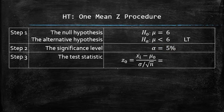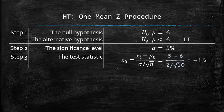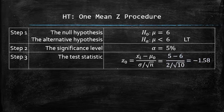The test statistic can be computed using the formula. In our case, the test statistic z₀ is equal to negative 1.58. Step 3 is complete.